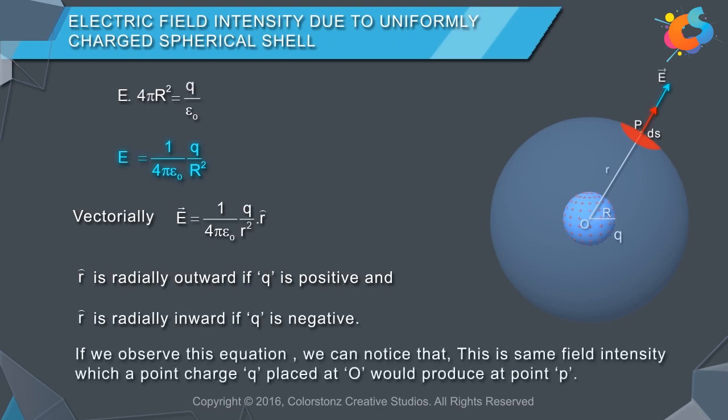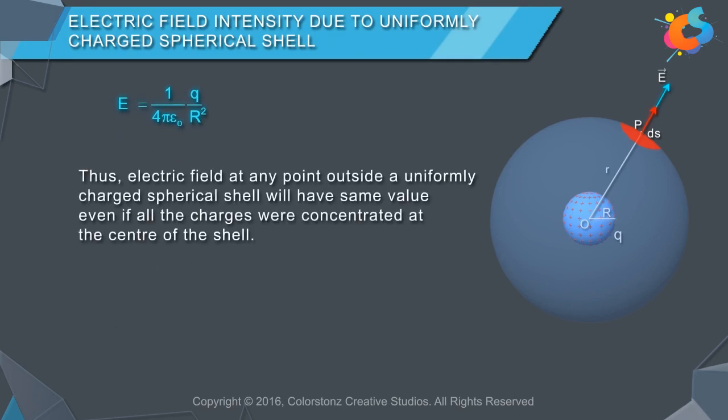If we observe this equation, we can notice that this is the same field intensity which a point charge Q placed at O would produce at point P. Thus, electric field at any point outside a uniformly charged spherical shell will have same value even if all the charges were concentrated at the center of the shell.